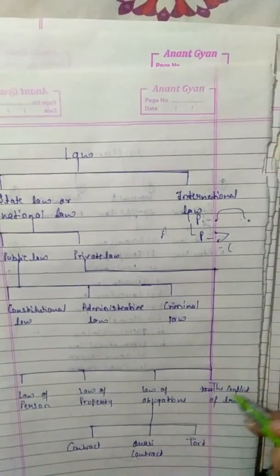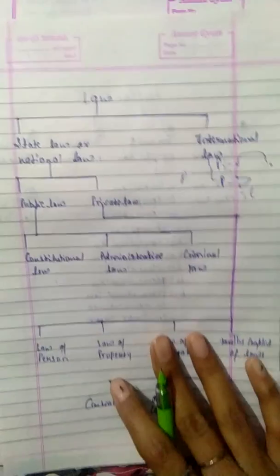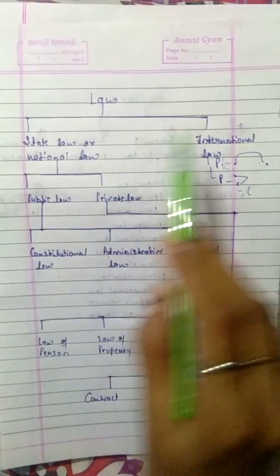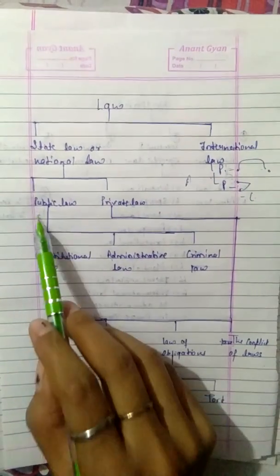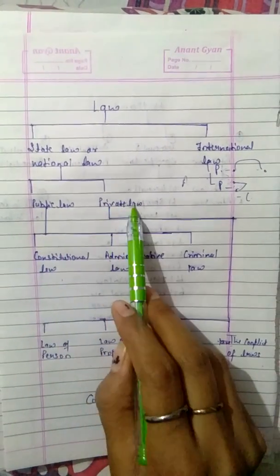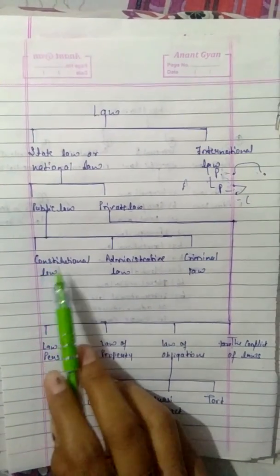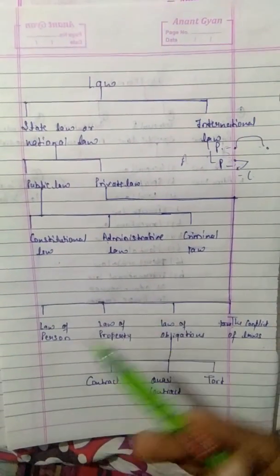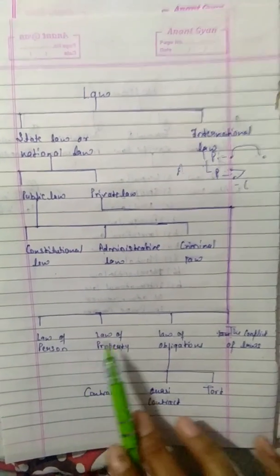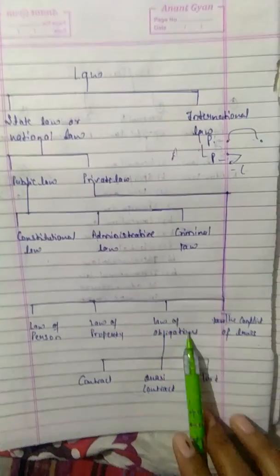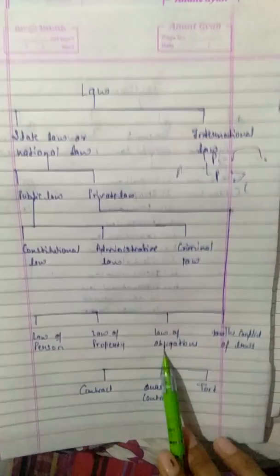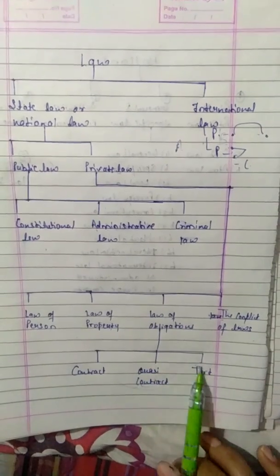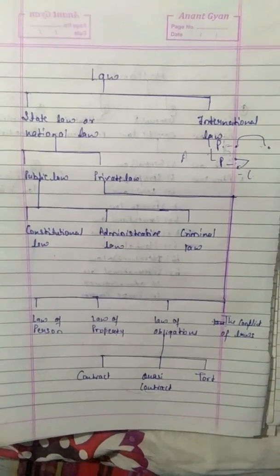We also call it conflicts of laws. So let's take a quick revision: laws are divided into national law and international law. National law has public law — constitutional law, administration law, and criminal law — and private law: law of person, law of property, law of obligations, and conflicts of law, which has three parts: contract, quasi-contract, and torts. So guys, today's topic ends here — please like, share and subscribe. Bye bye.